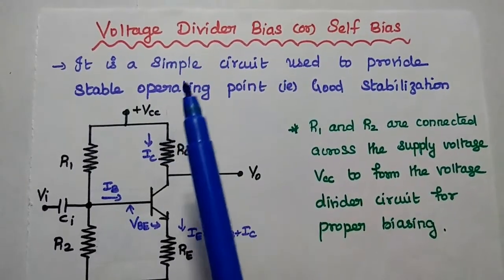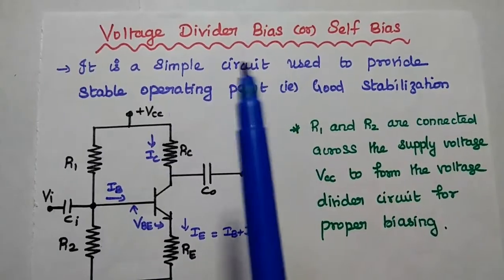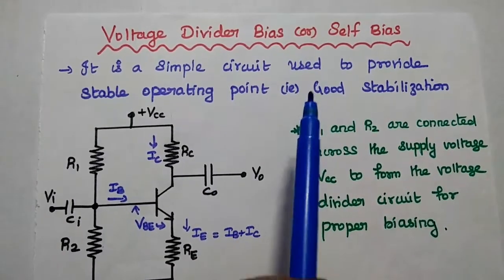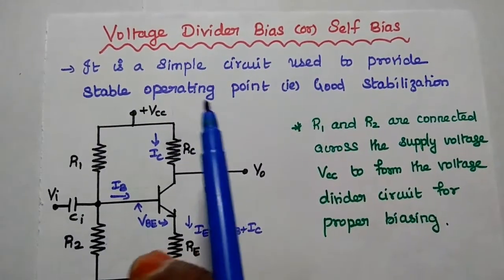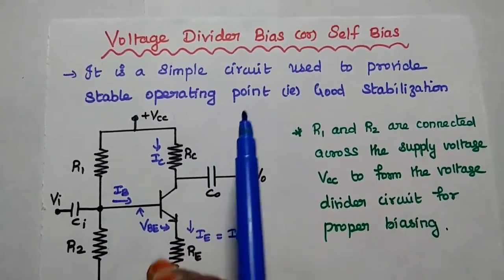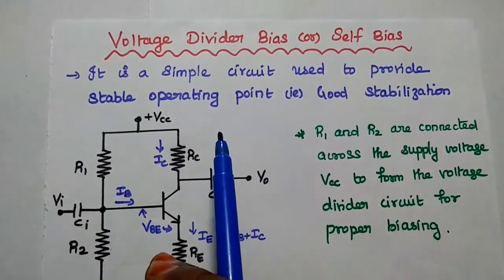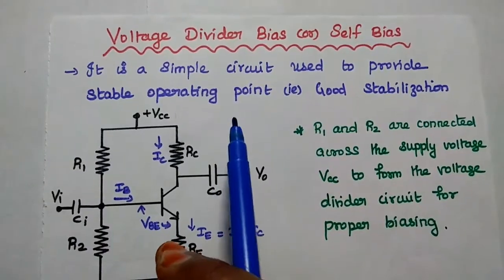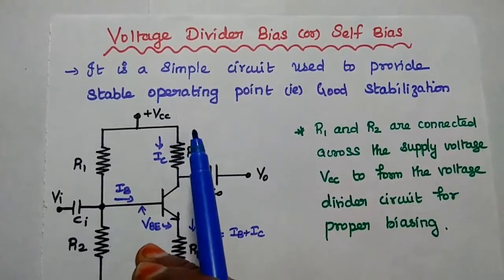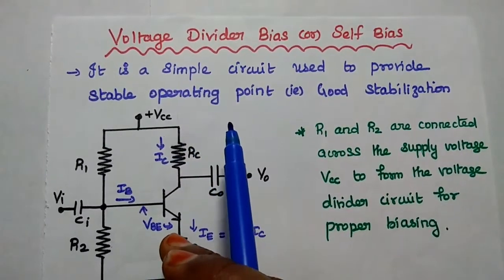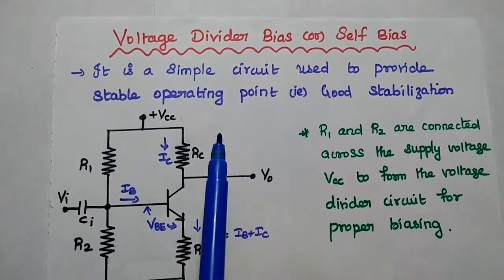Now we are going to discuss voltage divider bias in detail. It is also called as self-bias method. It is a simple method which is widely used to provide a stable operating point that has good stabilization in any electronic circuits. In order to get the maximum distortion-free output, the Q-point must be stable and located in the active region of the transistor. This voltage divider bias provides very good stabilization.